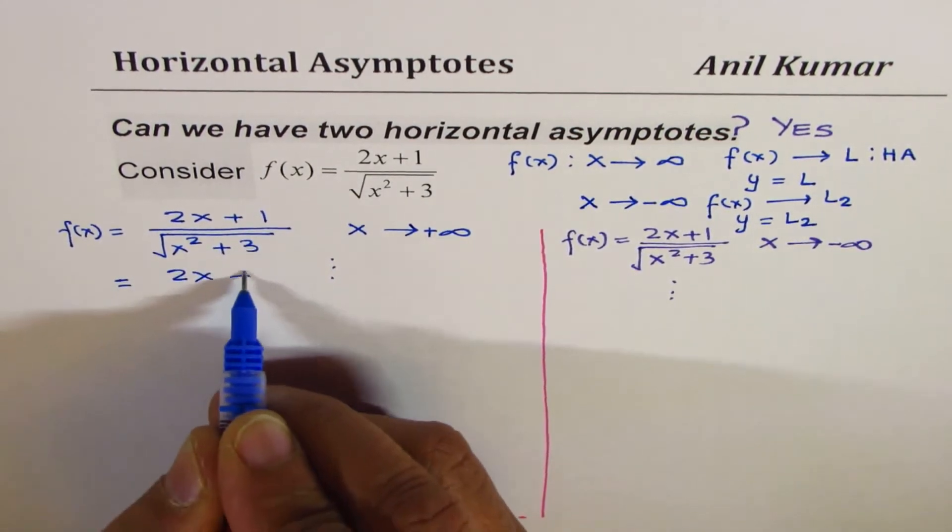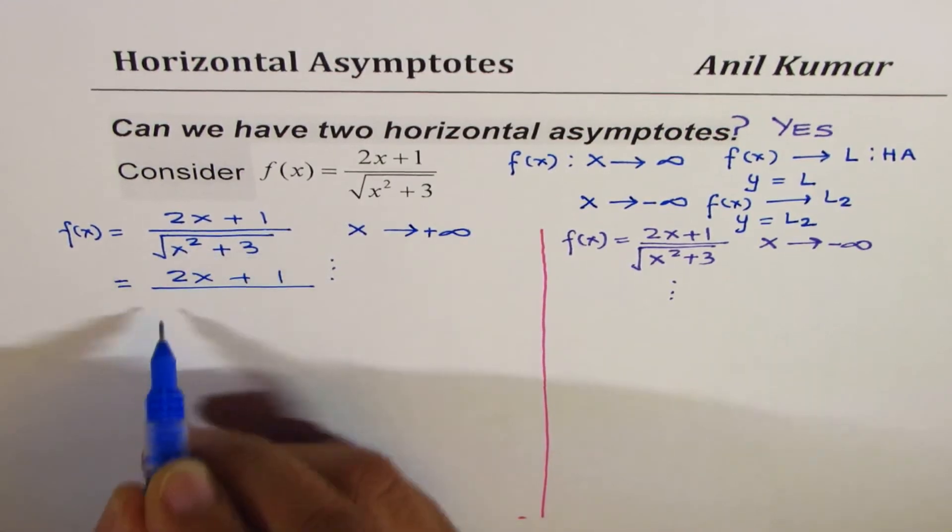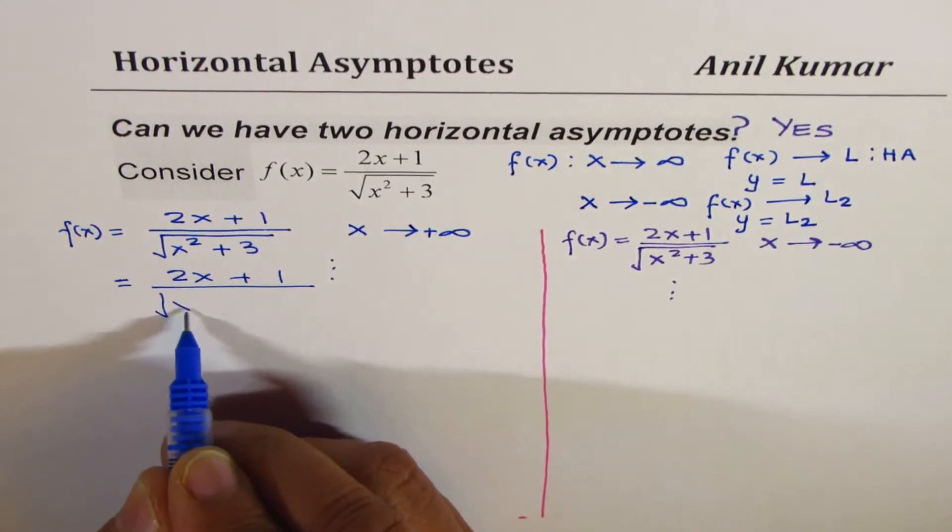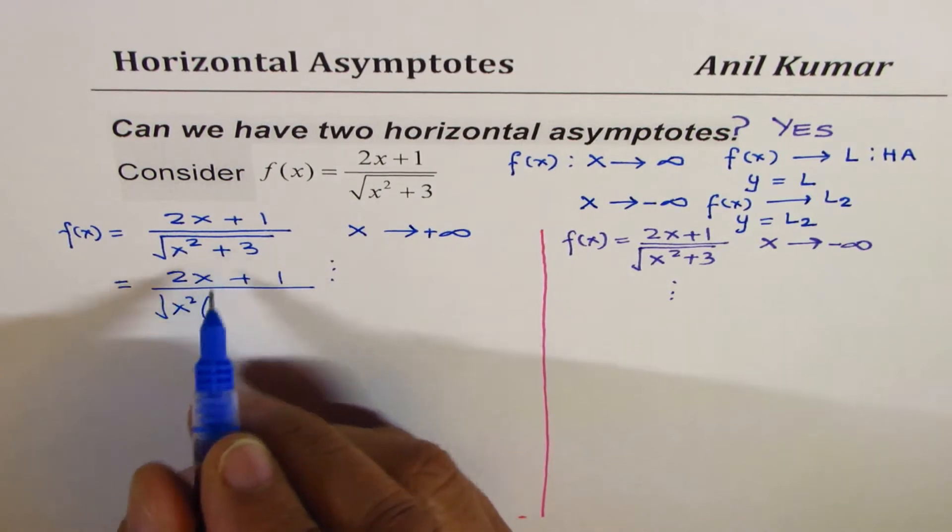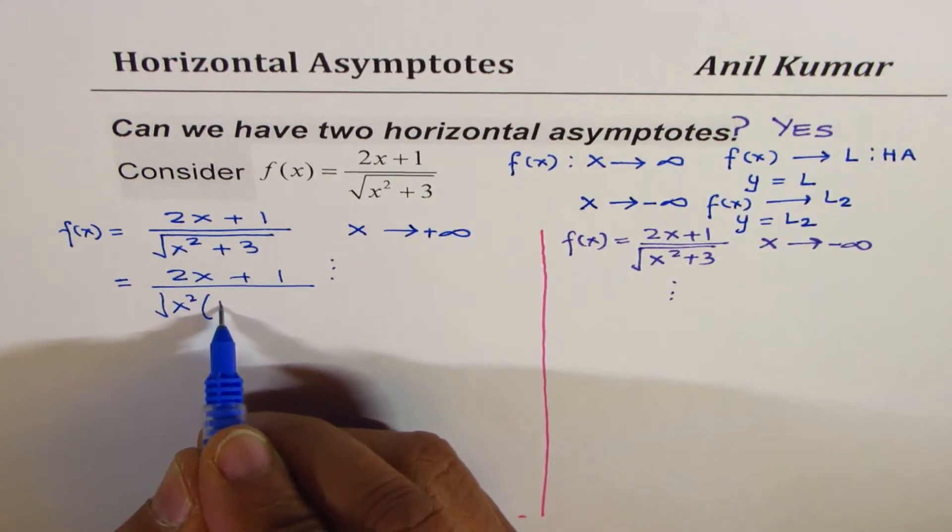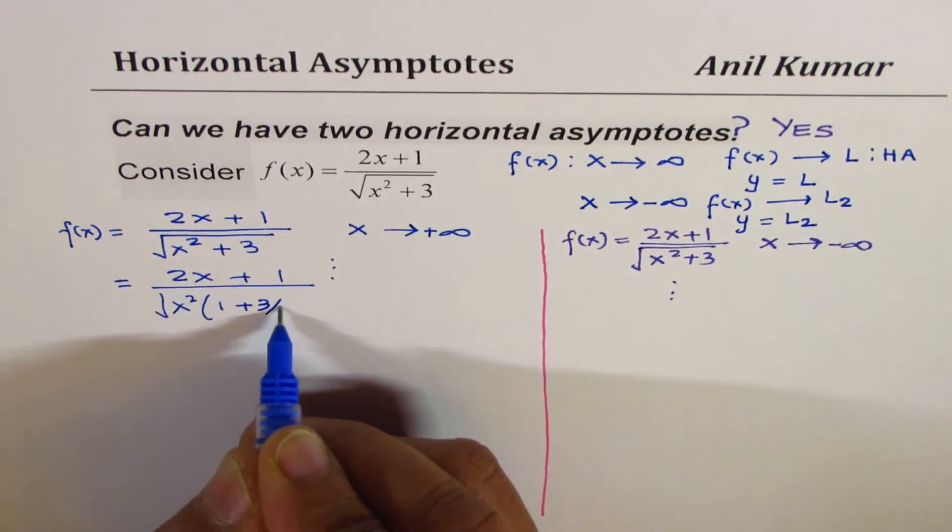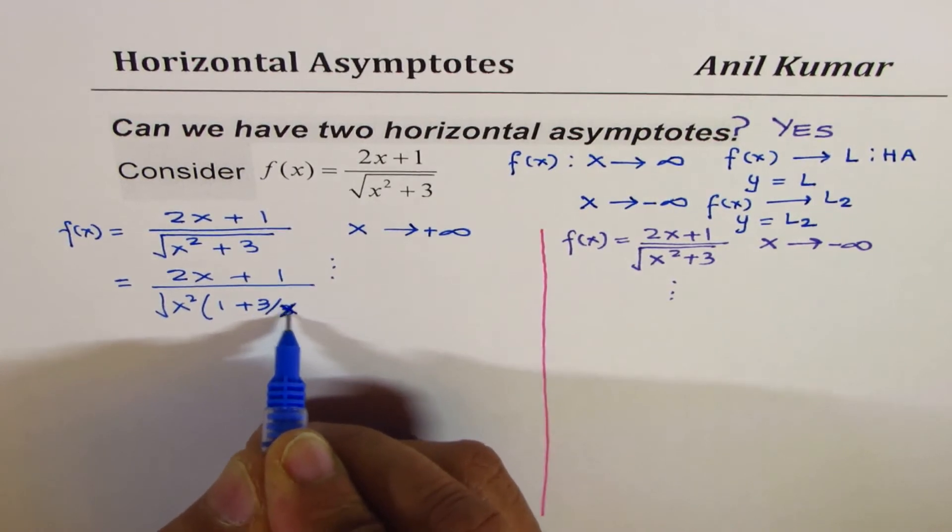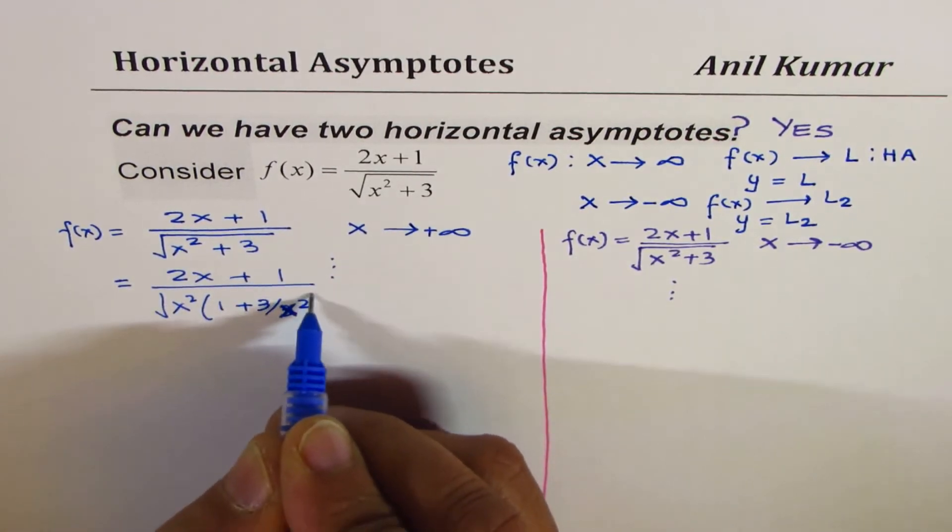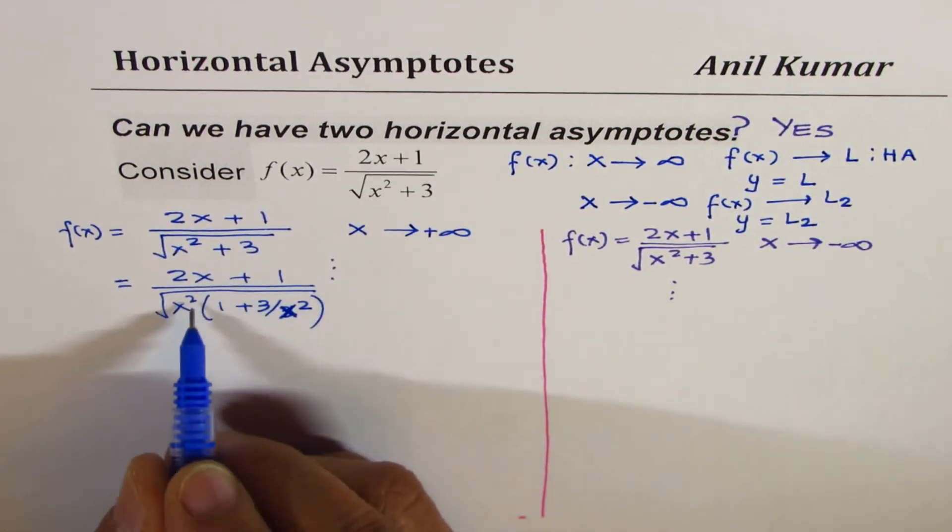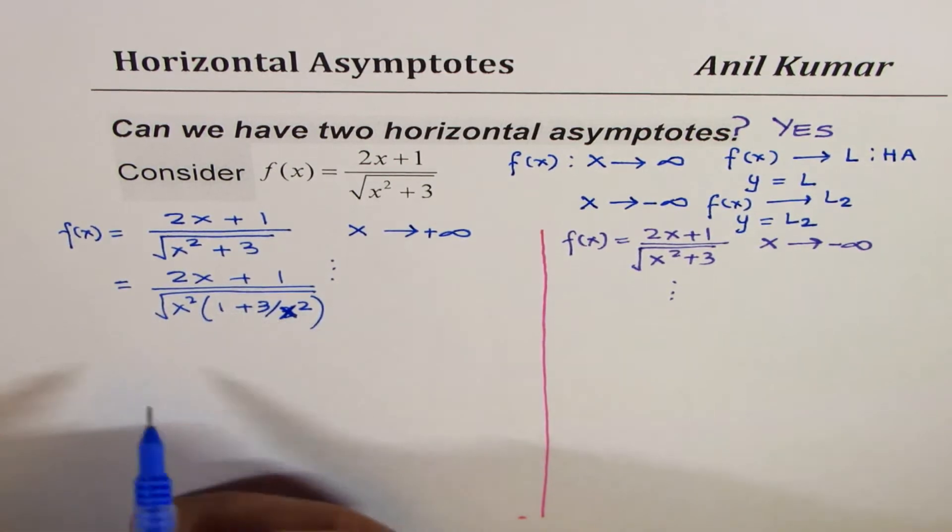The steps are kind of the same. For this particular condition, in the denominator we'll factor out x². This is a very important technique which you can apply for any such question. What we get here is 1 plus 3 over x². When you factor out x² you get 1 plus 3 over x².